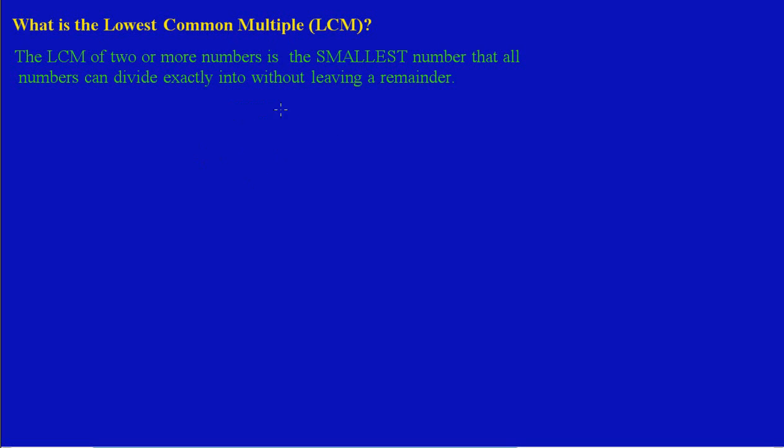Hi guys, in this lesson we're going to define what is the lowest common multiple. As the text states, the LCM of two or more numbers is the smallest number that all numbers can divide exactly into without leaving a remainder.